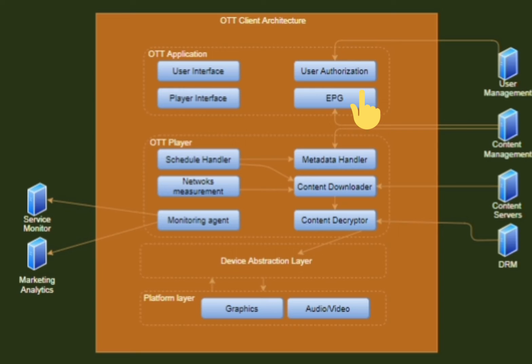Next is the player interface. The player provides an interface to the application to set various configuration parameters and also indicates key state changes to the application. One example of a key state change notification is the video playback state, which can be any of: stop, playing, pause, or error.